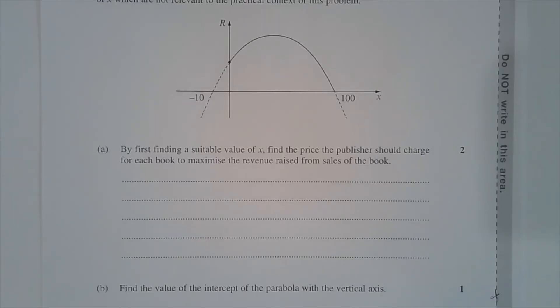Part A. By first finding a suitable value of X, find the price the publisher should charge for each book to maximise the revenue raised from sales of the book.